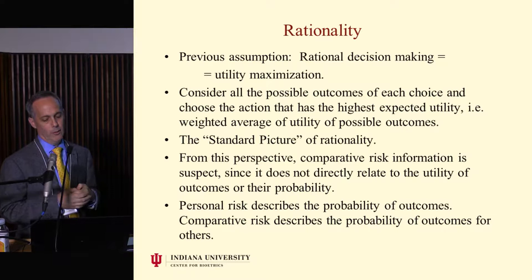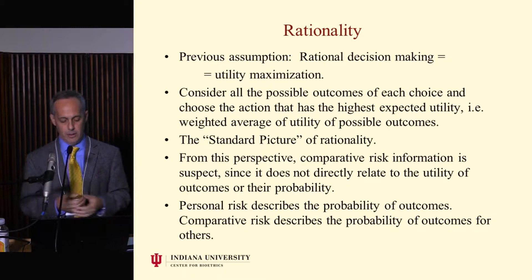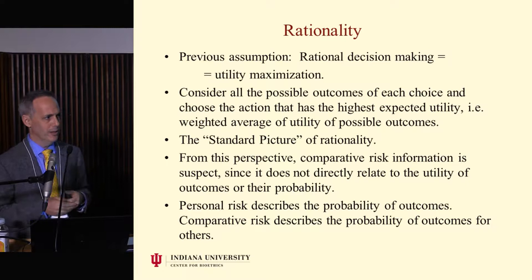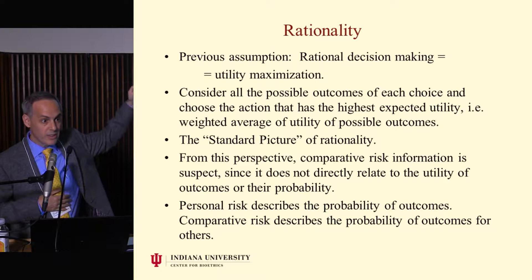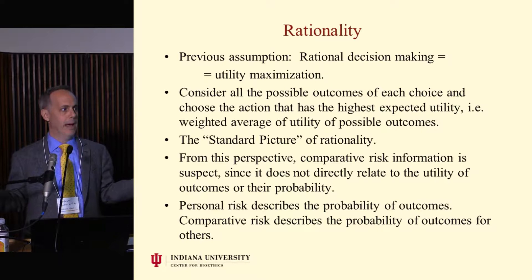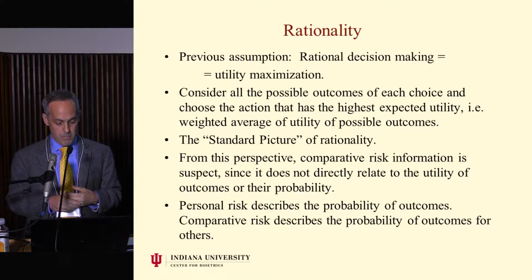The previous assumption of the standard model is that rational decision-making is utility maximization. You consider all possible outcomes of each choice, and choose the action with the highest expected utility — the highest weighted average of utility of possible outcomes weighted by probability of occurrence. From this perspective, comparative risk information is suspect, since it does not directly relate to the utility of the outcomes or their probability. The probability was already told in personal risk — 6% chance of occurring. And I can see lurking behind this paper a commitment to the standard picture, to seeing people as expected utility maximizers.